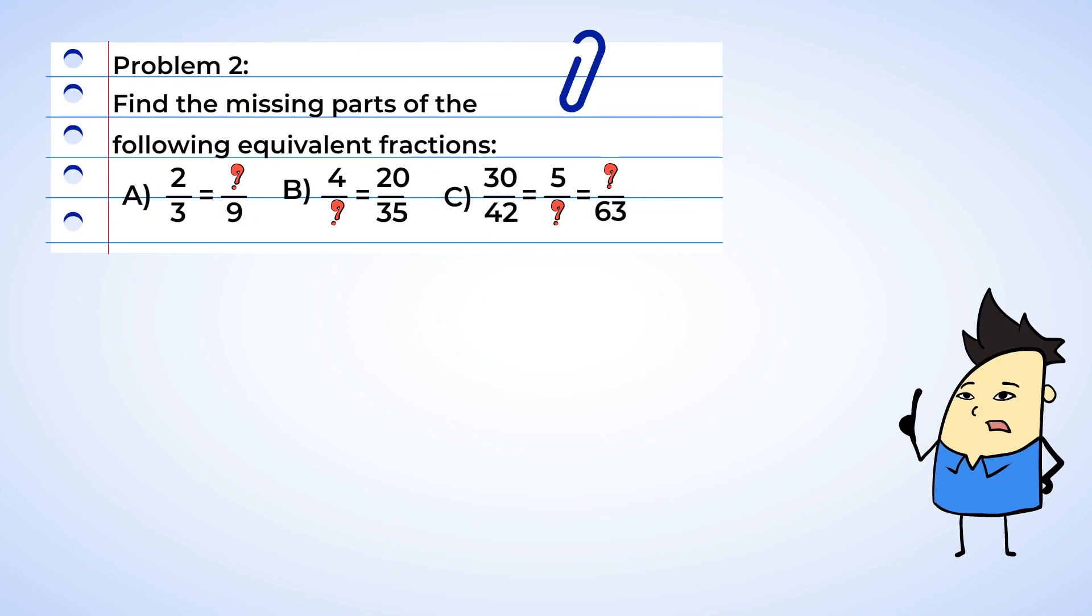Okay, we need to find the missing parts of the following equivalent fractions. Well, let's start with part A. Since both fractions have denominators, well, let's see how we can use multiplication to get from three to nine. Okay, we multiply by three. Whatever we do to the denominator, we need to do to the numerator. Two times three is six. Ah, six is the missing number, and two-thirds is equal to six-ninths.